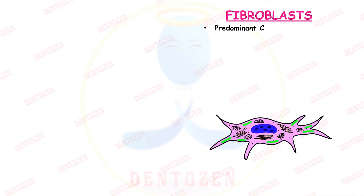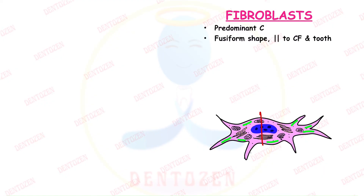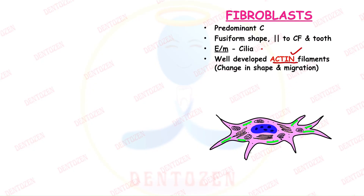Fibroblasts are the predominant cells of the PDL — the most predominant cells. They are fusiform shaped: wider in the center and narrower at the edges, sometimes stellate shaped. They are parallel to the collagen fibers and to the tooth long axis. Electron microscopy reveals they can have cilia, and they contain actin filaments.